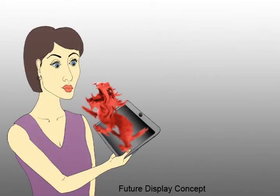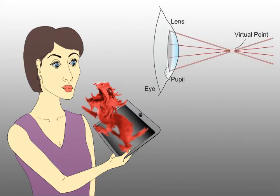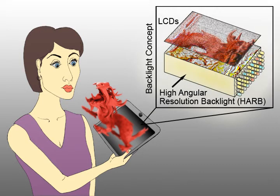A future concept is shown here. The challenge to build such a display is the synthesis of light fields that have sufficient angular resolution to steer multiple different light rays into the pupils of a human observer. To achieve this, we use a High Angular Resolution, or HAR, backlight, combined with stacked layers of LCD panels.